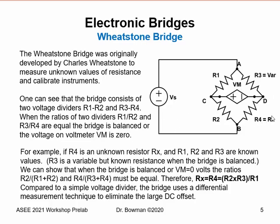When there is no voltage difference between nodes C and D, we call that having the bridge balanced. The ratio of R1 to R2 must be exactly equal to R3 to R4. For example, if R4 is our unknown resistor, we have an established R1/R2 ratio on the left side, and a variable but known resistor R3 to adjust for balance. When the bridge is balanced — voltage across the voltmeter equals zero — the ratios R2/(R1+R2) and R4/(R3+R4) must be equal, as they are simple voltage dividers.